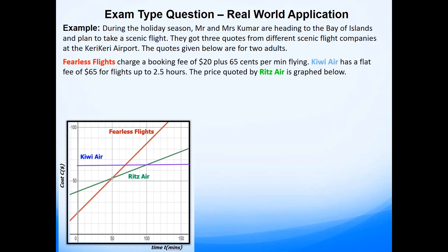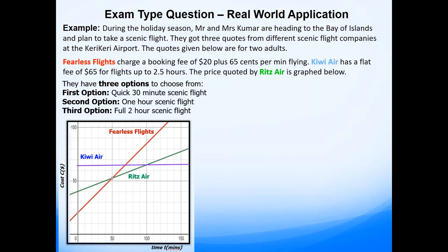PLS Flights charge a booking fee of $20 plus 65 cents per minute flying. Kiwi Air has a flat fee of $65 for flights up to two and a half hours. The price quoted by Ritz Air is shown on a graph. They have also been given three options: a quick 30-minute scenic flight, a one-hour scenic flight, and a full two-hour scenic flight.